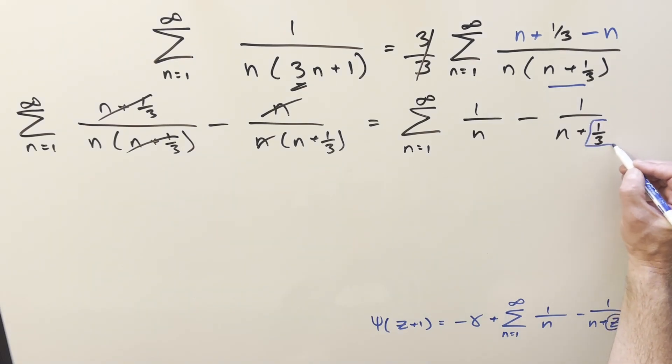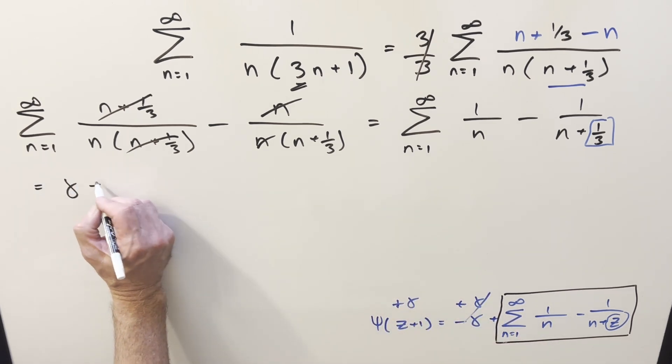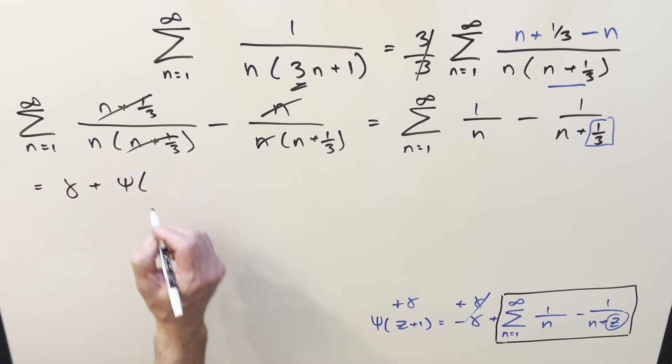Our input here is going to be this z value, and our sum is just going to be 1 third. Now in order to just isolate the sum that we want in the formula, I can rearrange it a little bit. Let's just add the constant on both sides here so that it cancels out on the right.